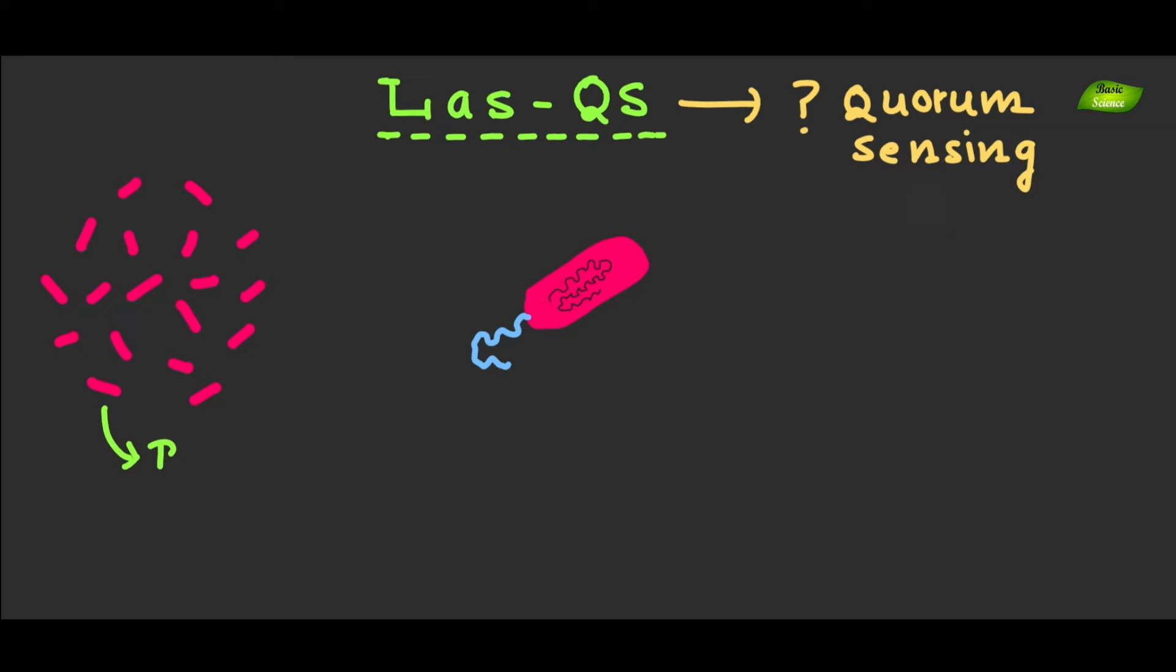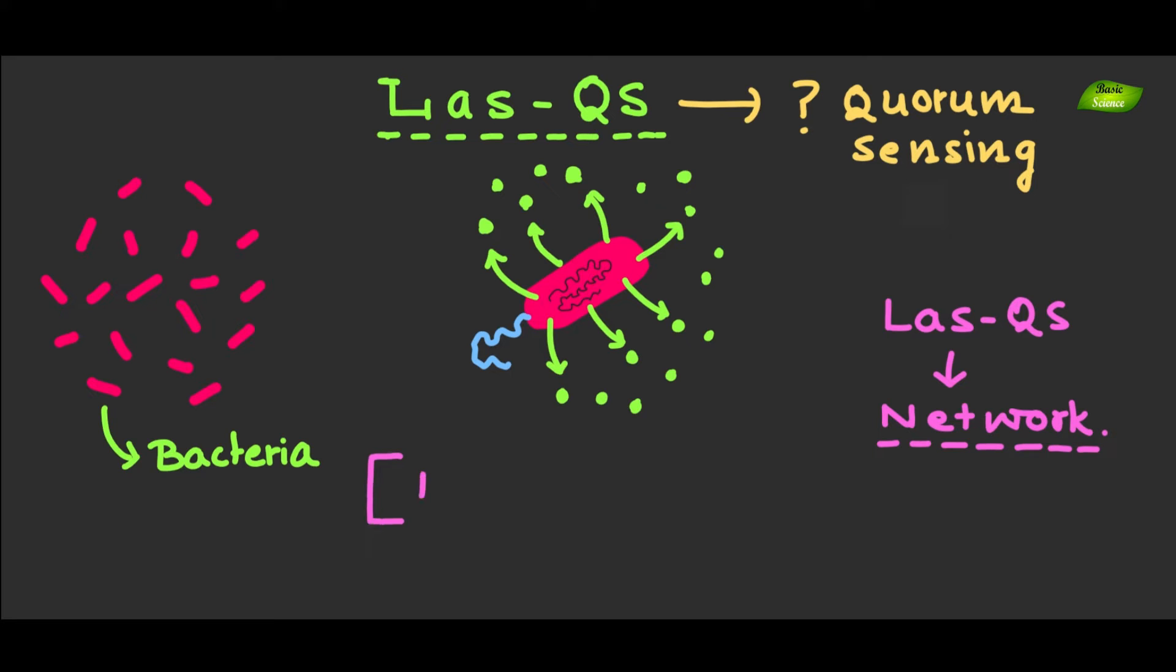Imagine bacteria as tiny chatboxes constantly exchanging molecular messages to coordinate their activities. In the case of Pseudomonas aeruginosa, the LAS quorum sensing system is like their very own way to communicate with other bacterial cells, allowing them to synchronize their behavior based on population density.